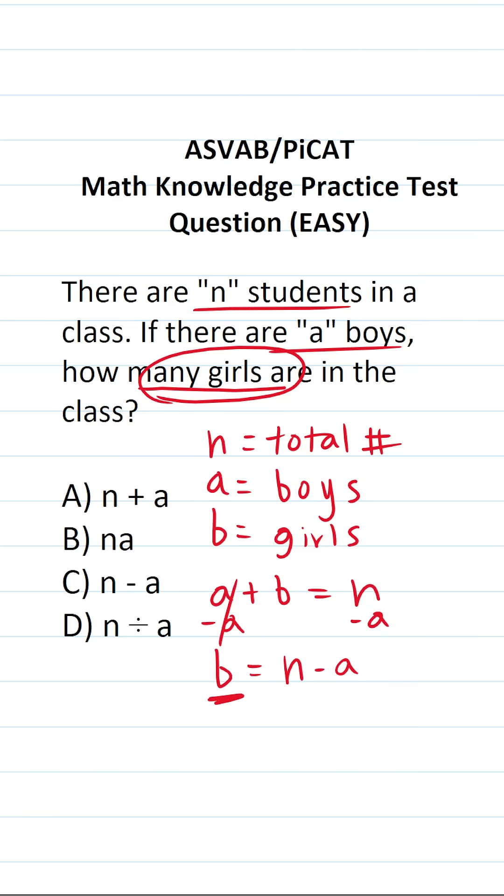So as you can see, b, the number of girls in the class, is equal to n minus a, which is answer choice C.